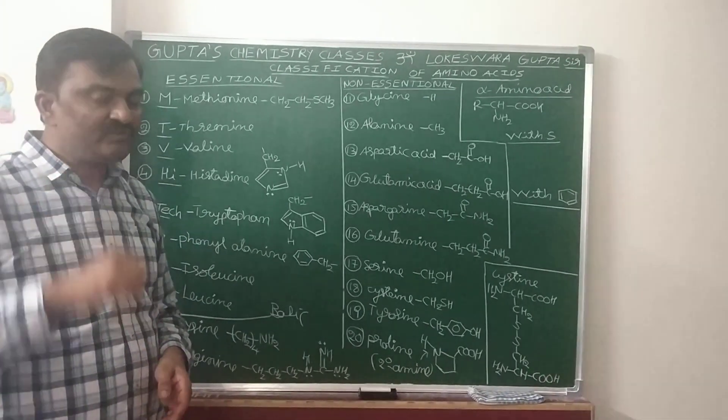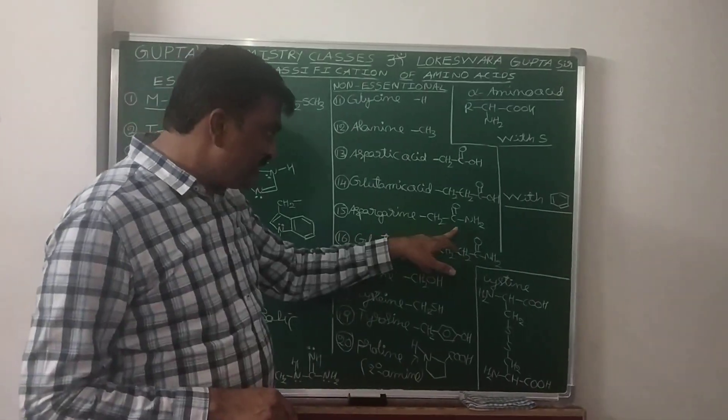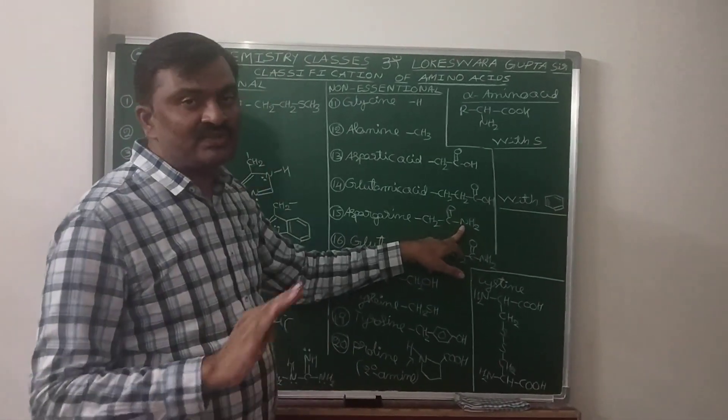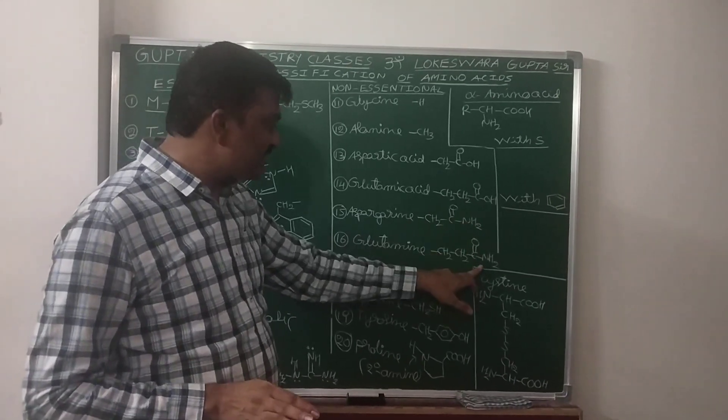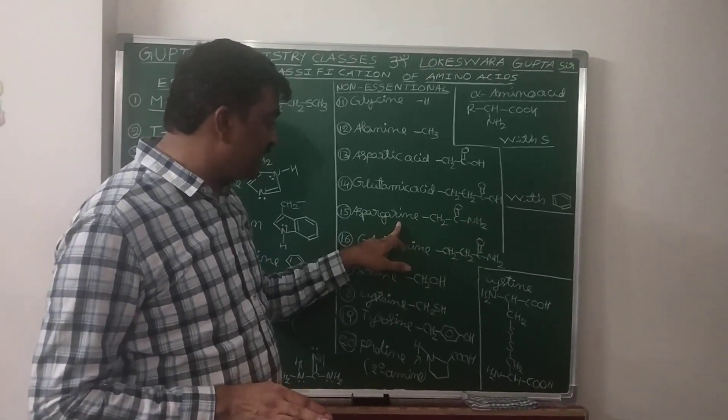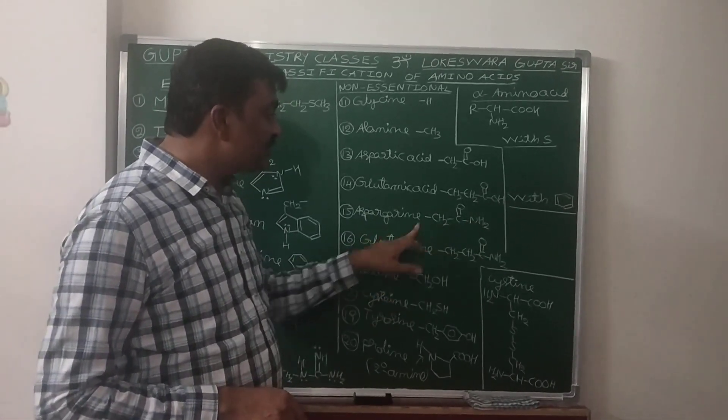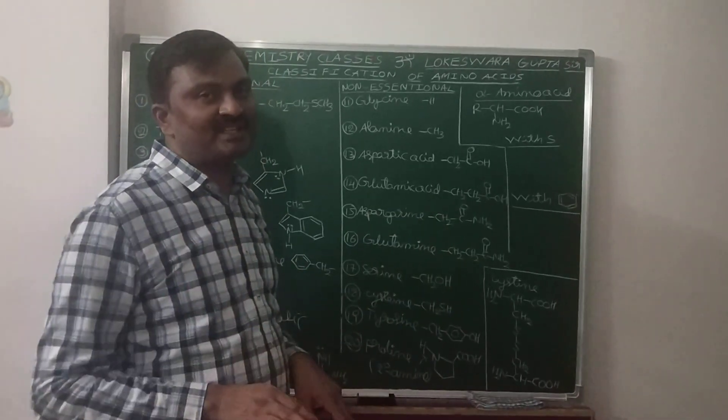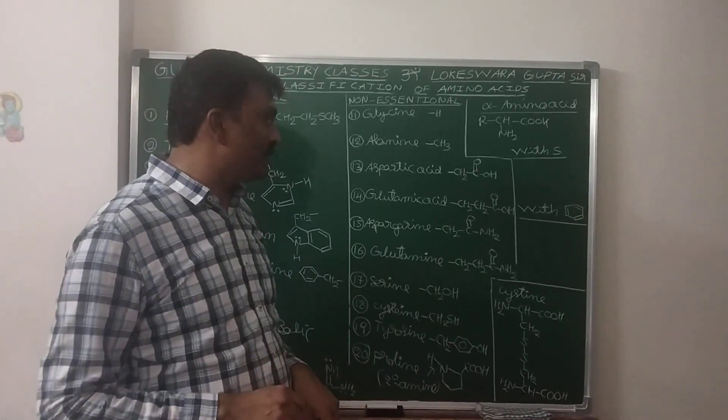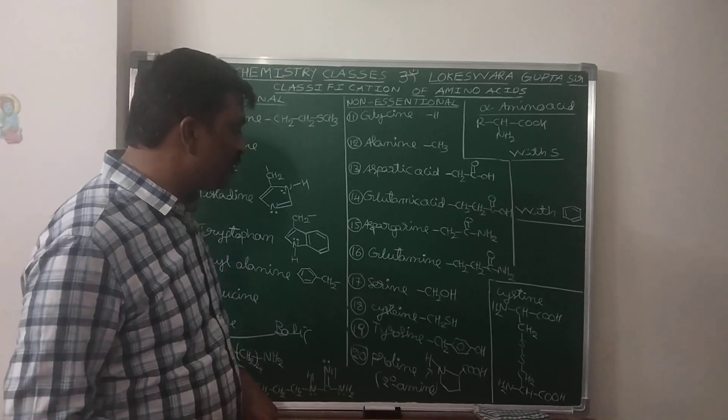While considering the basic, see, here this amide is not so much basic. That's why this Asparagine and Glutamine, these two do not come under basic alpha amino acids.